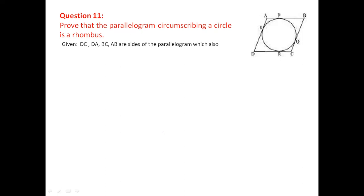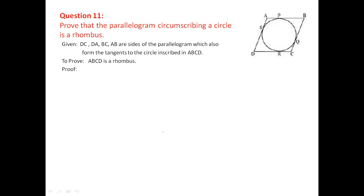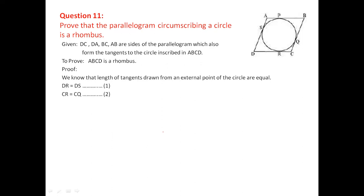Question 11: prove that a parallelogram circumscribing a circle is a rhombus. Given: ABCD is a parallelogram with each side tangent to the inscribed circle. Using question 8's result: AB + CD = AD + BC. In a parallelogram, opposite sides are equal, so AB = CD and AD = BC.